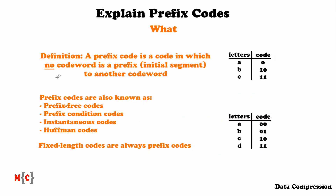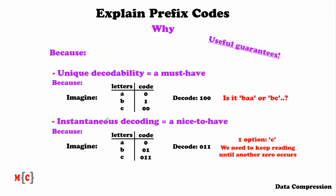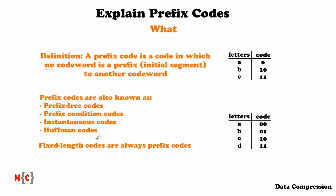So let's go back to the definition. Based on this definition, the term 'prefix code' may be a strange name because a prefix code doesn't contain codewords which are a prefix to another codeword. Prefix codes are also known as prefix-free codes, prefix-condition codes, instantaneous codes, and also Huffman codes because of the Huffman algorithm — but I'll leave the Huffman algorithm for another video. A very important remark: fixed-length codes are always prefix codes, because each codeword has the same length as every other, so no codeword can ever be a prefix to another.